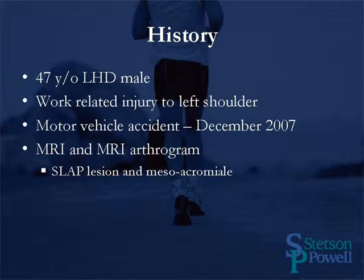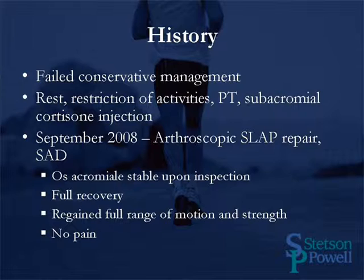This is a case history of a 47-year-old left-hand dominant male who suffered a work-related injury to his left shoulder following a motor vehicle accident in December of 2007. At that time, an MRI and MRI arthrogram showed a SLAP lesion and a mesoacromiale. He failed conservative management including rest, restriction of activities, physical therapy, and a subacromial cortisone injection. In September 2008, he underwent an arthroscopic SLAP repair with a subacromial decompression. At the time of surgery, the os acromiale was stable upon inspection. The patient made a full recovery — he regained full range of motion and strength of his shoulder with no pain, and was able to return to work and activities with no restrictions.